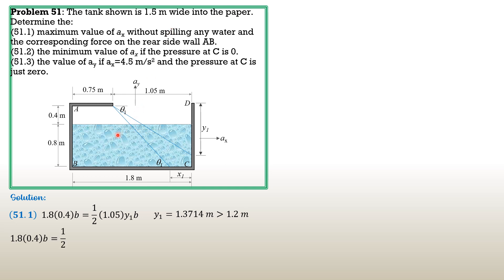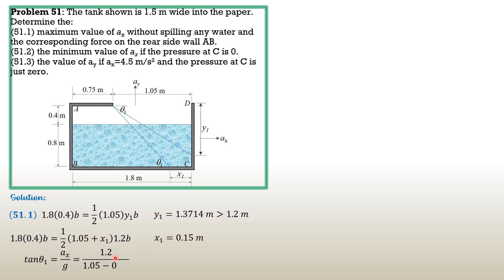So: 1.8 times 0.4 times b equals one-half of (1.05 plus x1) times 1.2 (the height of the tank) times b. Cancelling b and solving, x1 equals 0.15 meters. Now, tangent of theta 1 equals ax over g, which by trigonometry equals opposite side 1.2 divided by (1.05 minus 0.15). So ax over g equals 1.2 over 0.9, and with g = 9.81, the maximum ax is 13.08 m/s².